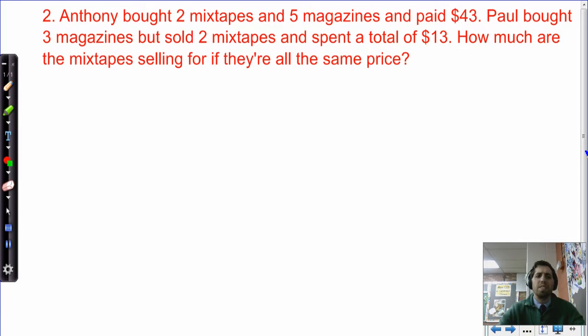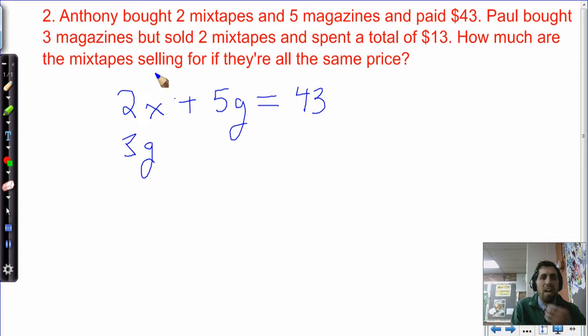Let's look at a word problem that we need to use. So Anthony bought two mixtapes and five magazines and paid $43. Paul bought three magazines but sold two mixtapes and spent a total of $13. How much are the mixtapes selling for if they're all the same price? Okay, so Anthony bought two mixtapes and five magazines, so two times, in this case, let's use the variables that make the most sense. Oh, I'm actually going to use X then for mixtapes because mixtapes has an X and magazines also starts with M, so that one will make sense. So two mixtapes plus the cost of five magazines gave him a total bill of $43. All right, what about Paul? Paul bought three magazines, so 3G, he spent three times the price of the magazine, but then he sold two mixtapes, so we need to use minus. This is not adding to his bill. This is taking away from his bill. Two times X, and that gave him 13.